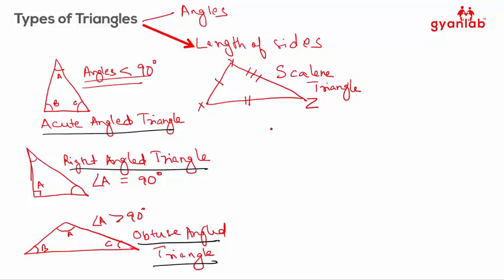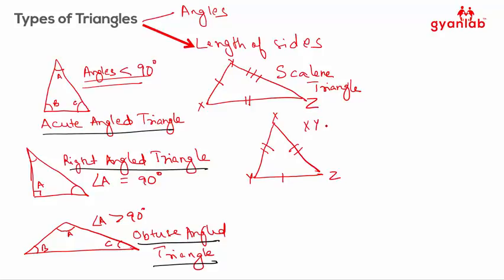But what if two of the sides of a triangle are equal? Say XY and YZ are equal. In that case, when two of the sides of a triangle are equal in length, it's called an isosceles triangle.